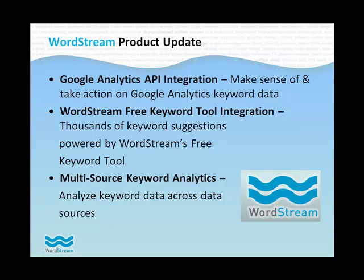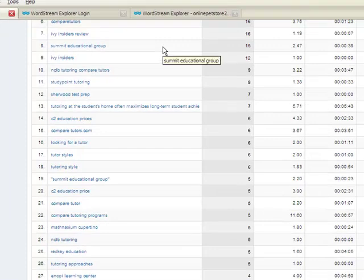This allows WordStream's users to more efficiently target searchers, providing them with more and better qualified search traffic. Google Analytics API access means you can leverage WordStream's keyword management tools to get more out of your site's historical data.